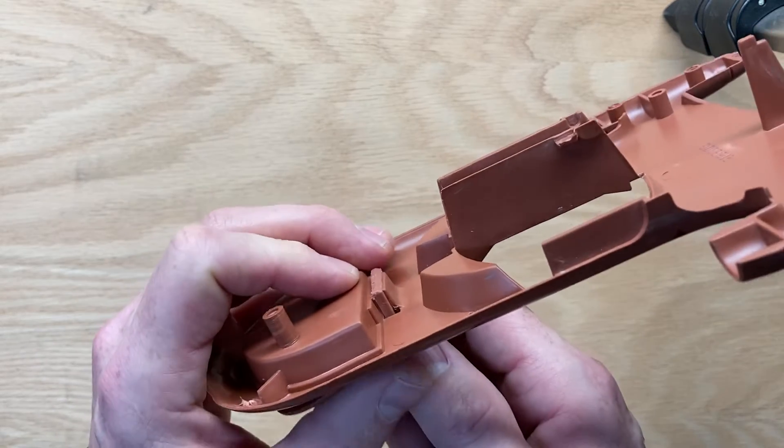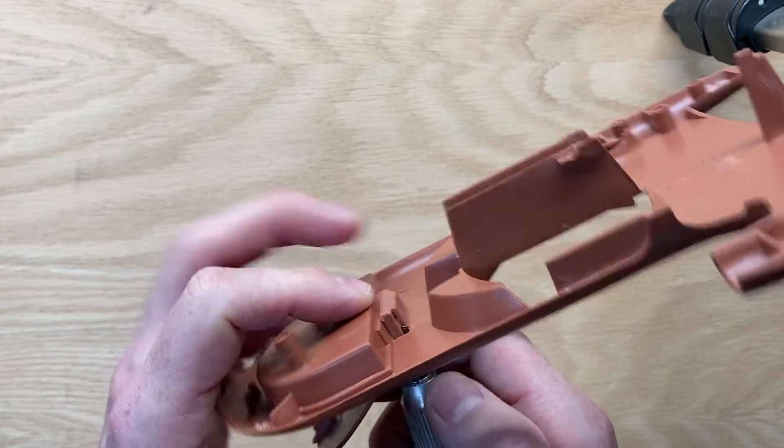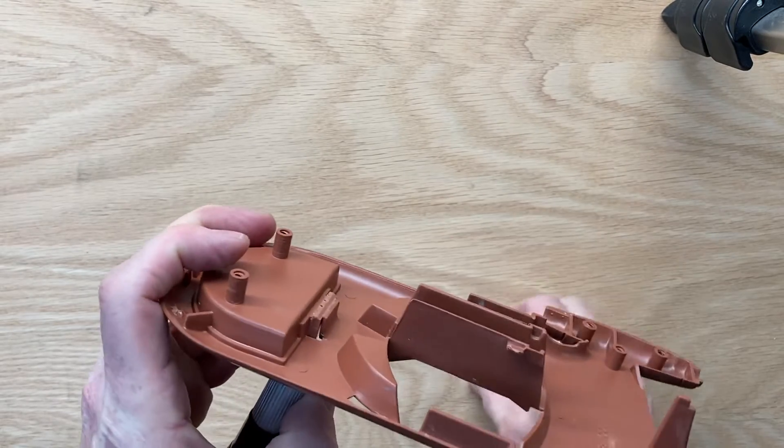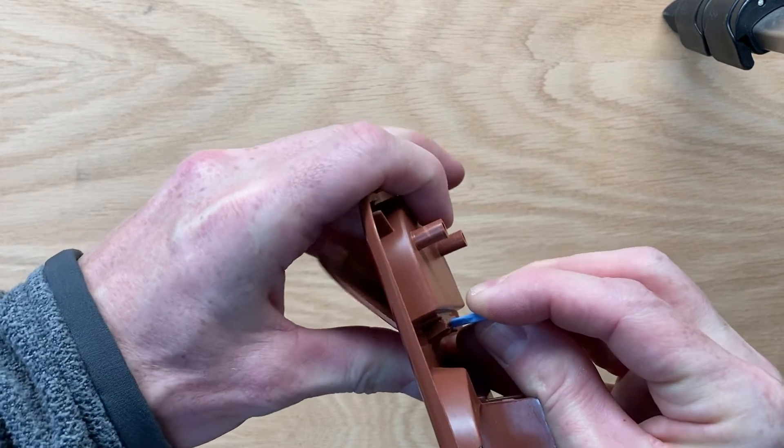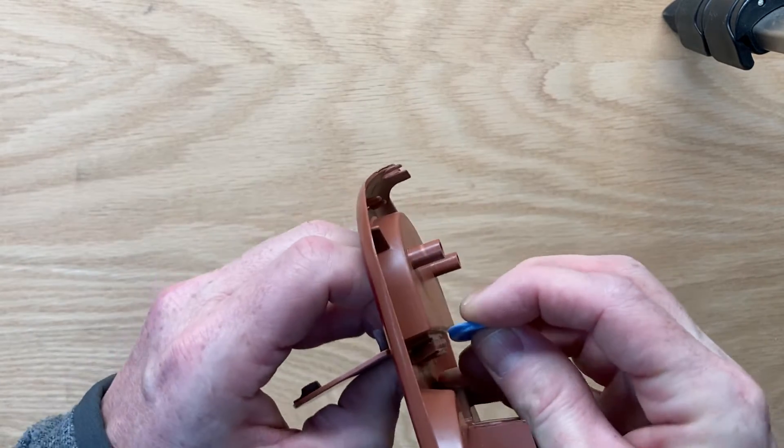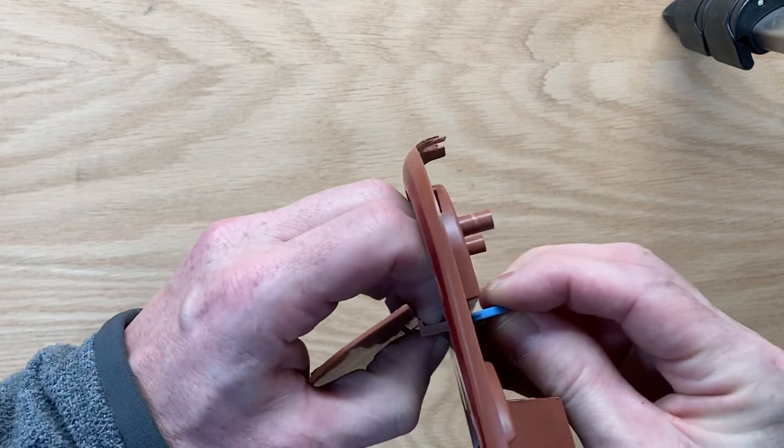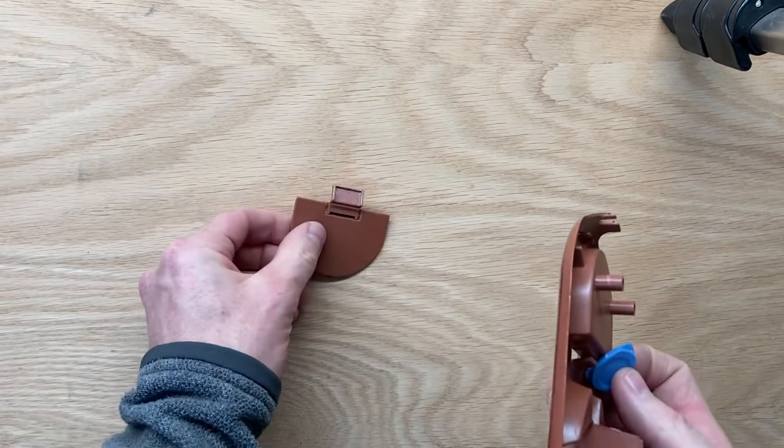This opens it up kind of like a jaw and you'll get a little pop. Once you hear that pop, grab something that's small enough, about the same width of the hinge, that you can use to push it through that opening. It will take a little bit of force but it comes out fairly easy at that point.